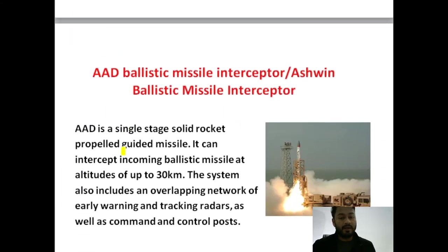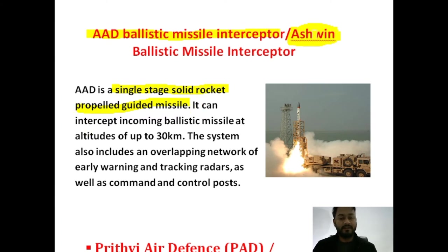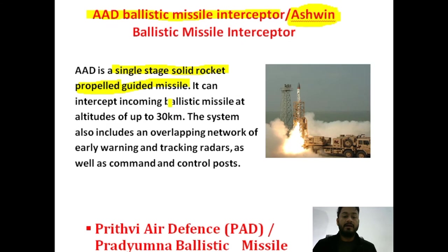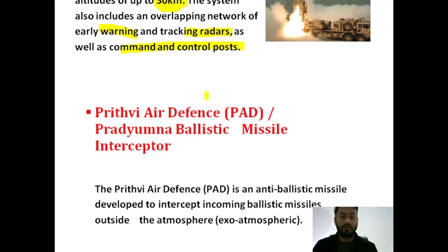First in the series we have the Advanced Air Defense ballistic missile interceptor called Ashwin, made by DRDO. It is a single-stage, rocket-propelled and guided missile that automatically goes to its target with the help of a navigator. It uses solid fuel and can intercept the incoming ballistic missile up to an altitude of 30 kilometers. It also has a radar system, warning system, and command and control post, so we can get an early warning through the radar system.